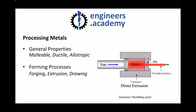On the right hand side here we see an example of one of those processes. This is direct extrusion where we have the billet, or the material that's being extruded, and that material is being forced through the die using a ram. The material needs to be soft and malleable in order to be deformed and forced through the die, where the extruded product will have a different cross section to the original billet.